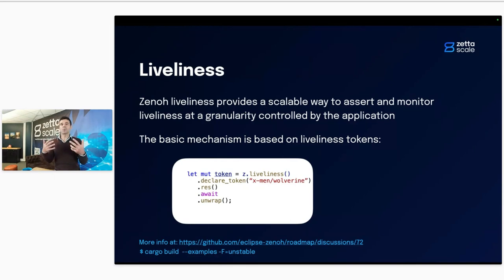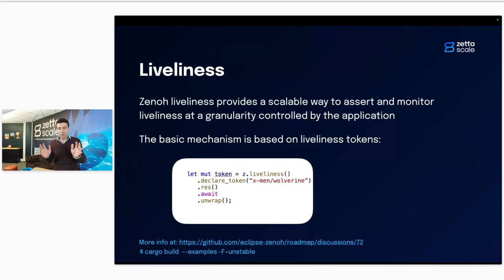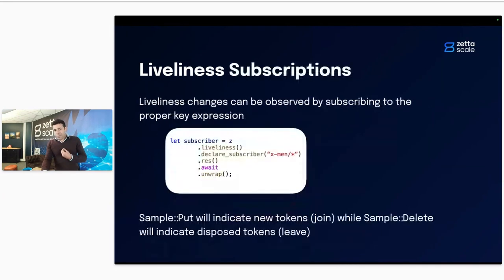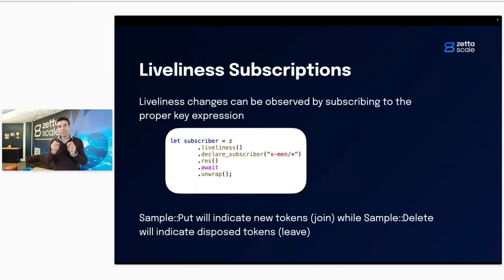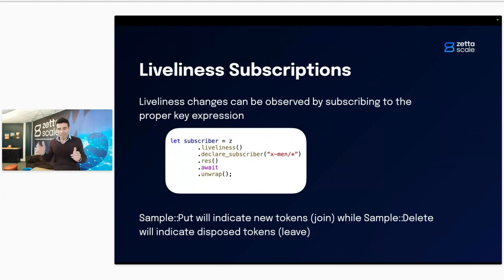What we've done in Zenoh is give you the ability to get liveliness while making it scalable. Our routers understand this concept, so we can do lots of aggregation — liveliness is very lightweight. There is a specific API: you declare a liveliness token for a key expression. For example, Wolverine says 'I'm alive and kicking' by calling `z.liveliness().declare_token('x-men/wolverine')`. If you're interested in the liveliness of all X-Men, you create a liveliness subscriber with `z.liveliness().declare_subscriber('x-men/**')` — and you get notified of all X-Men liveliness events.